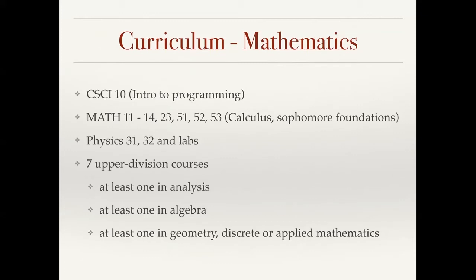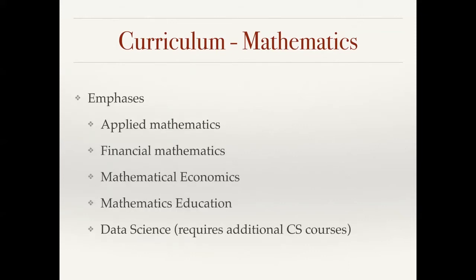Math 51 is discrete mathematics, 52 is an introduction to abstract algebra, and 53 is linear algebra. These are our sophomore-level foundation courses. The math majors take two quarters of physics and the associated labs, and then seven upper division courses with one in analysis, one in algebra, and one in geometry, discrete, or applied mathematics. We have optional emphases in mathematics including applied mathematics, financial mathematics, mathematical economics, mathematics education for people who want to teach high school, and a data science emphasis which does require additional computer science courses.